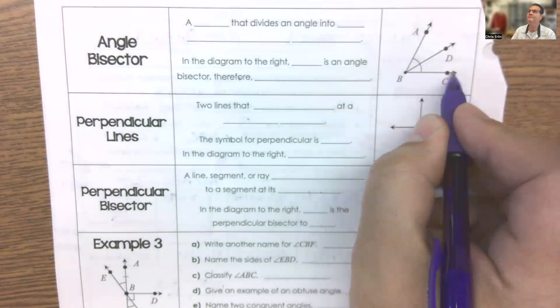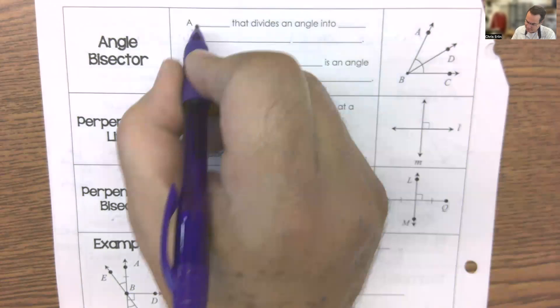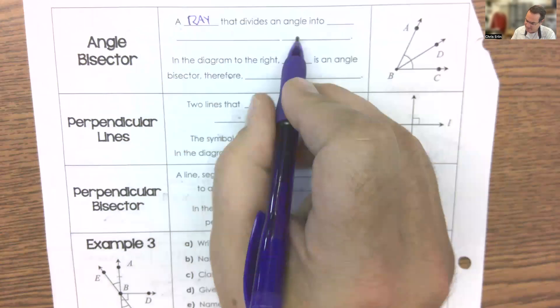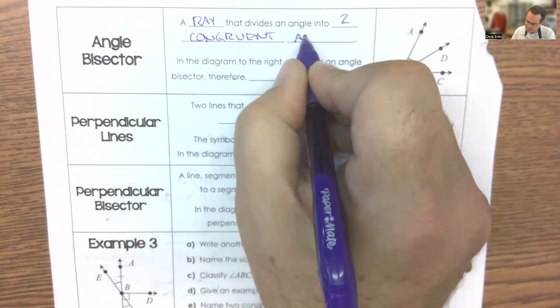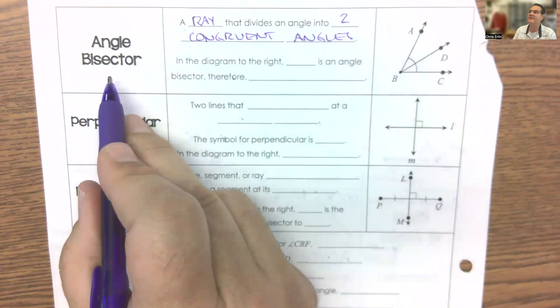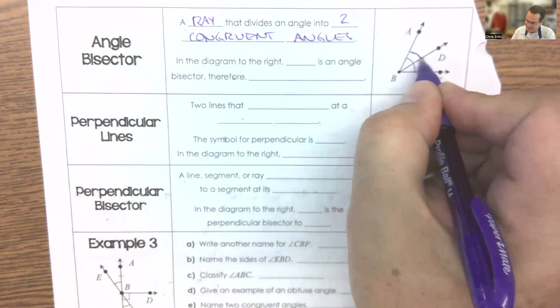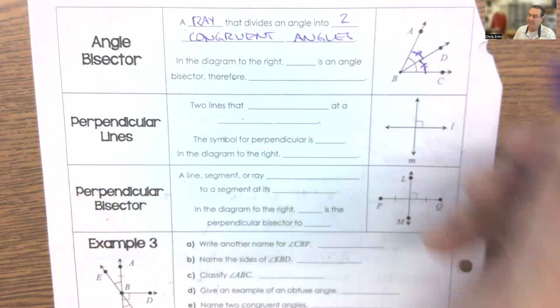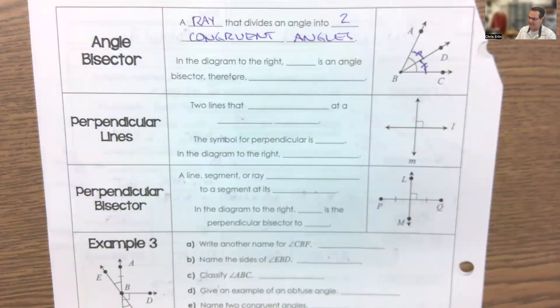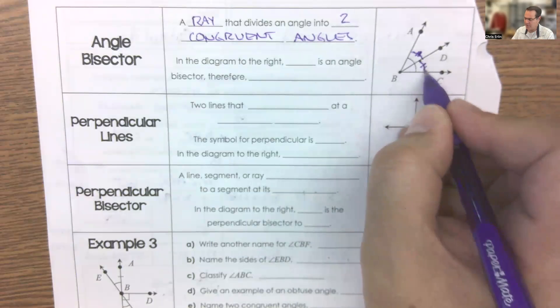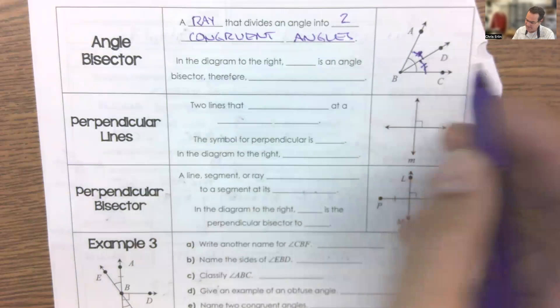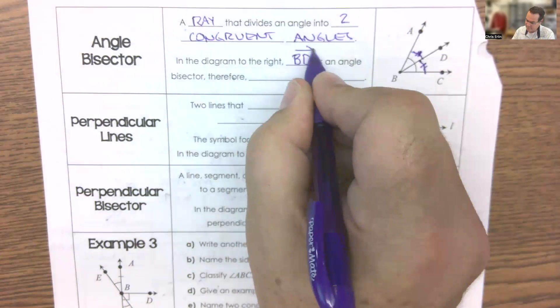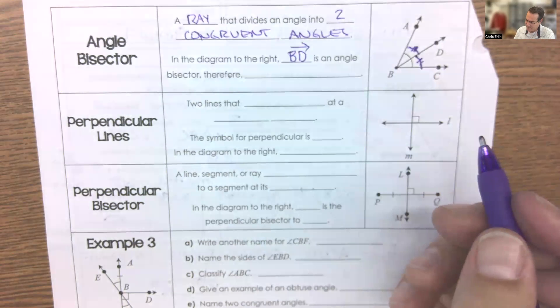Okay, next page. So if we take an angle and we stick a ray through the middle of it, if the ray divides that angle into two congruent angles, then that's called the angle bisector. In other words, we're saying that this angle and this angle come out being the same. Notice how I'm using the same hash marks we can use for segments on little arcs to show that this piece is the same size as this piece. In the diagram at the right, the ray BD is an angle bisector. Therefore, what can we conclude?